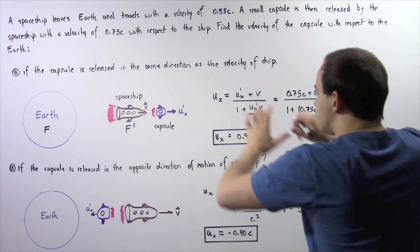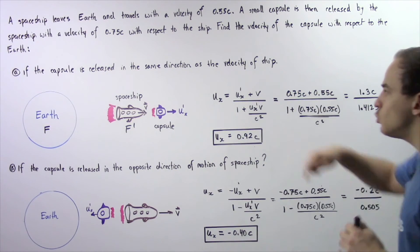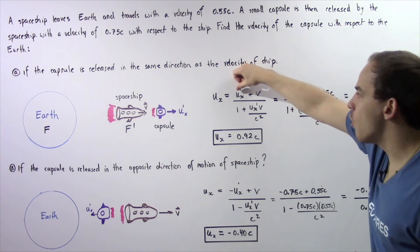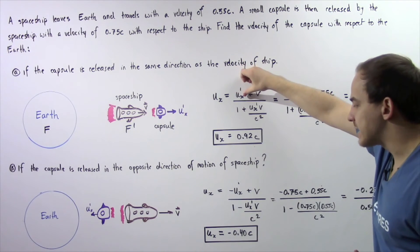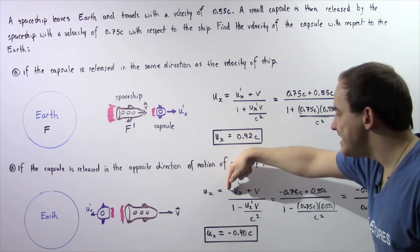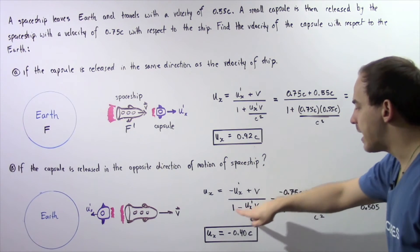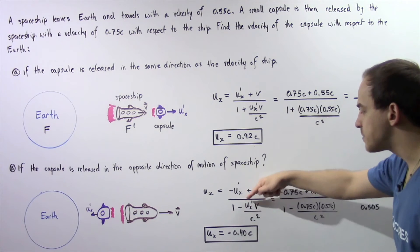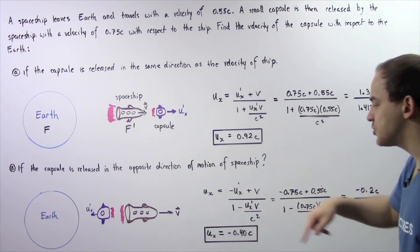When we apply this equation, we want to use a negative sign for this U'x as shown in the following equation. Now we have negative U'x' plus V divided by 1 minus U'x' times V divided by C squared.